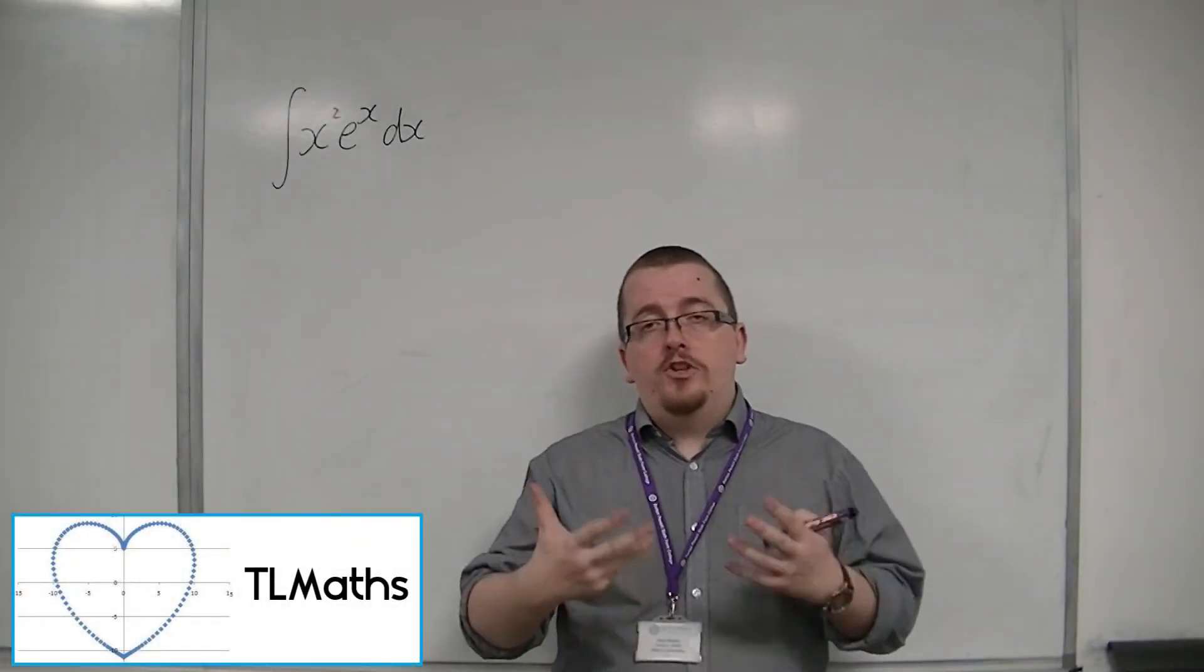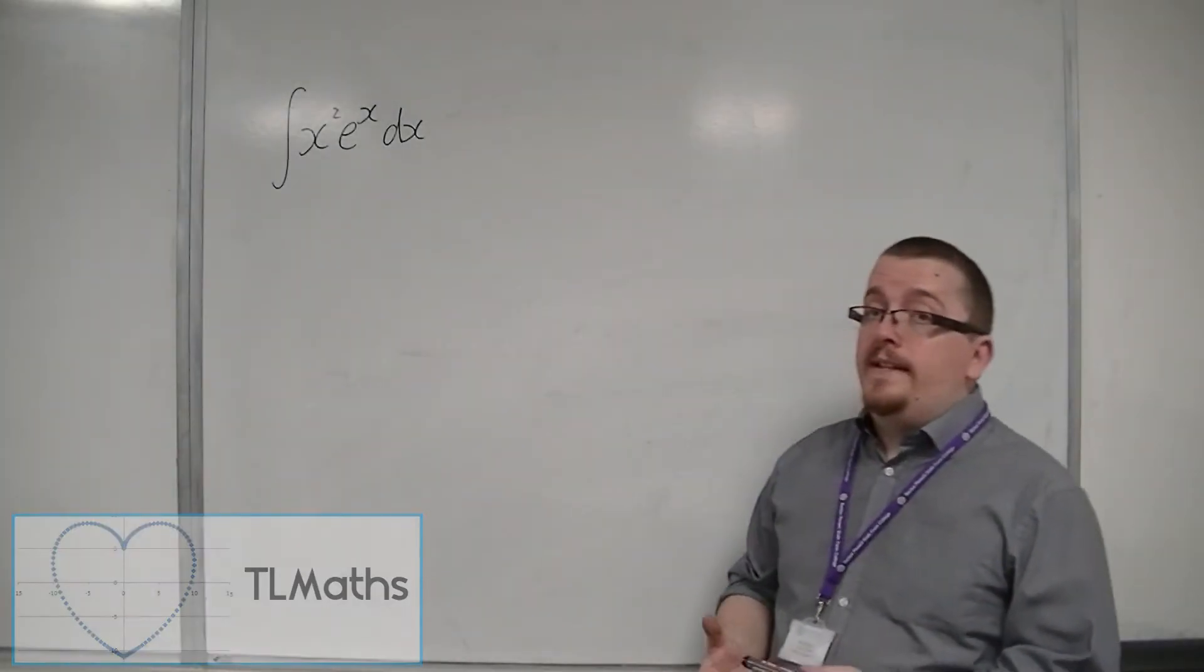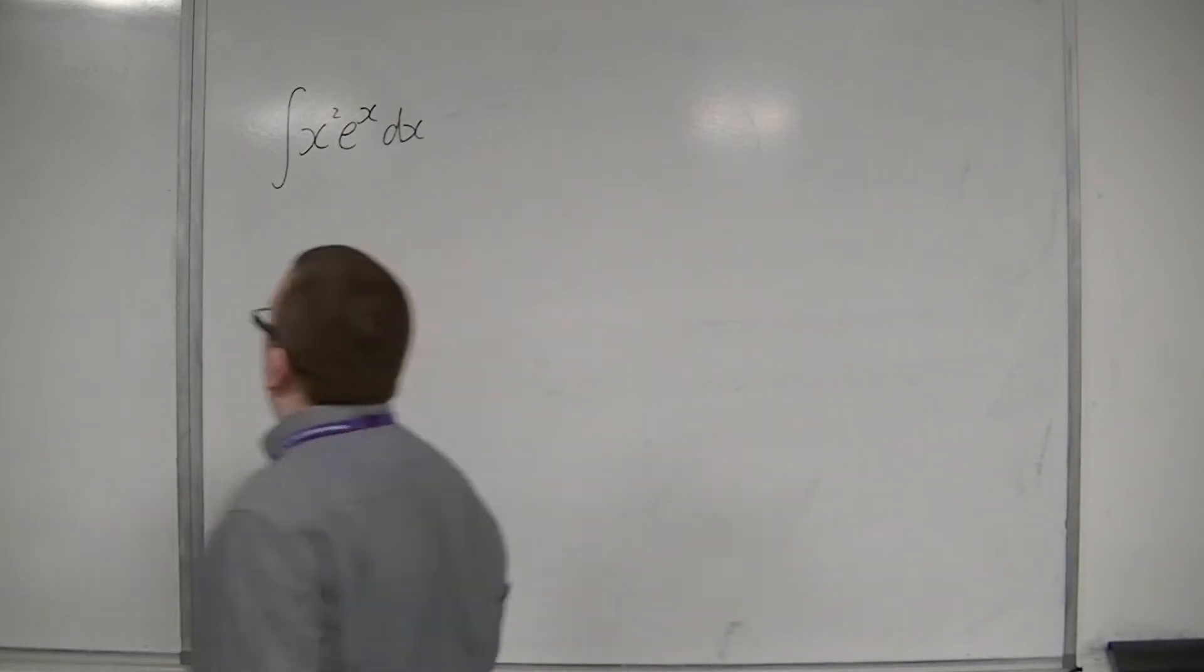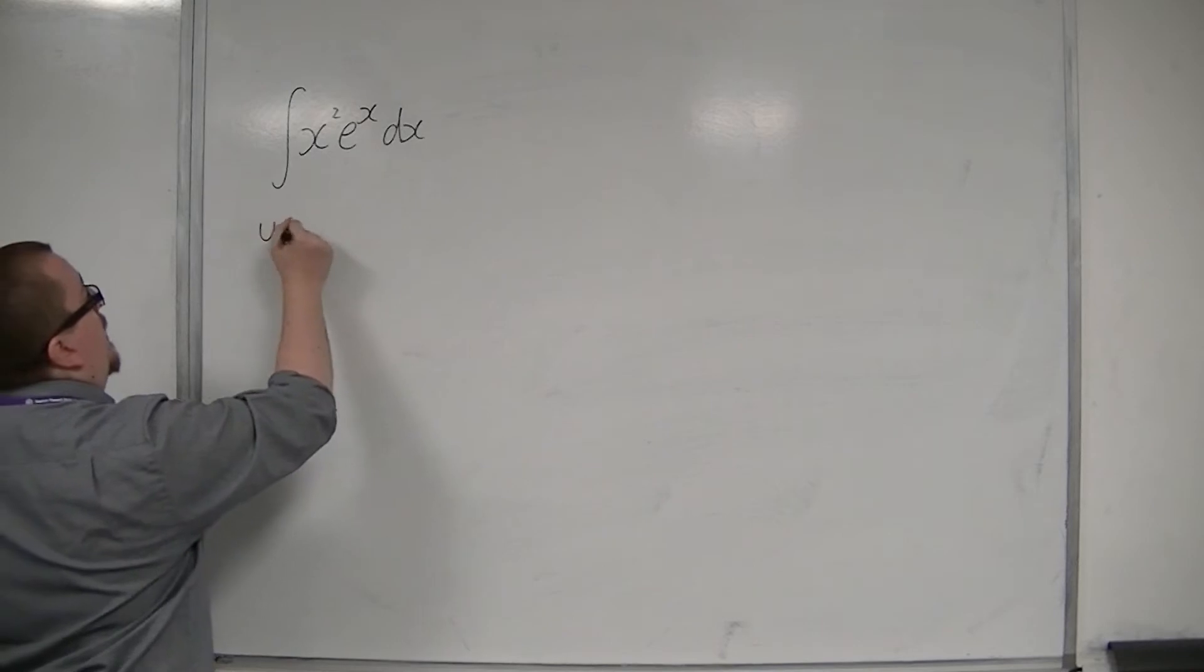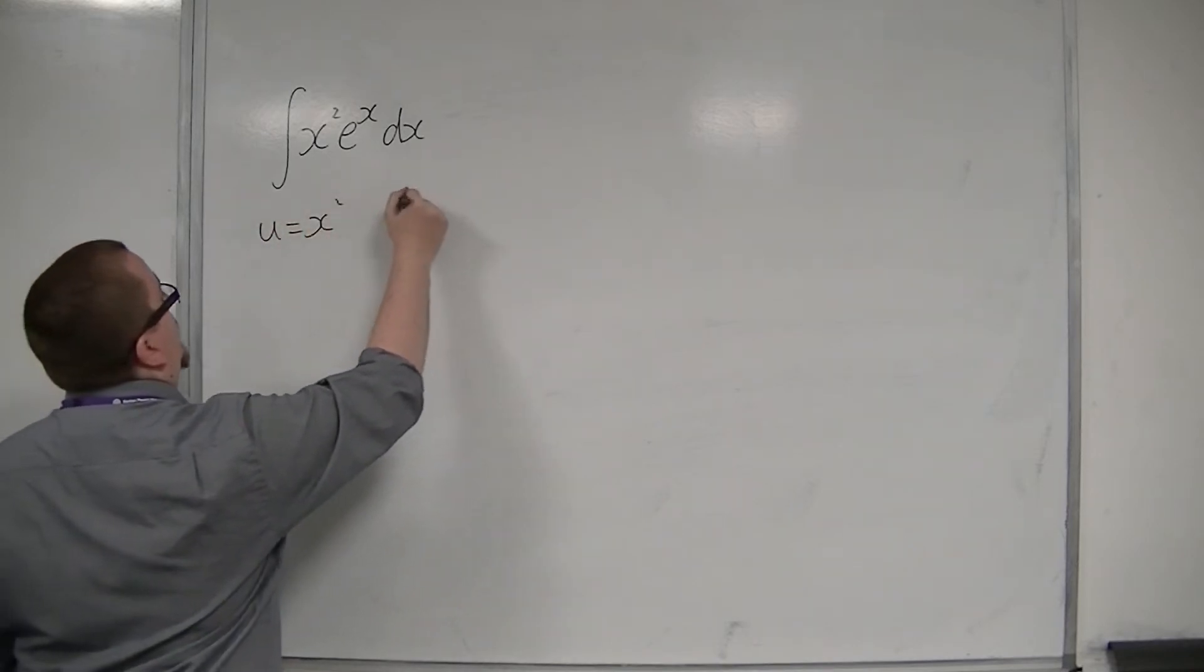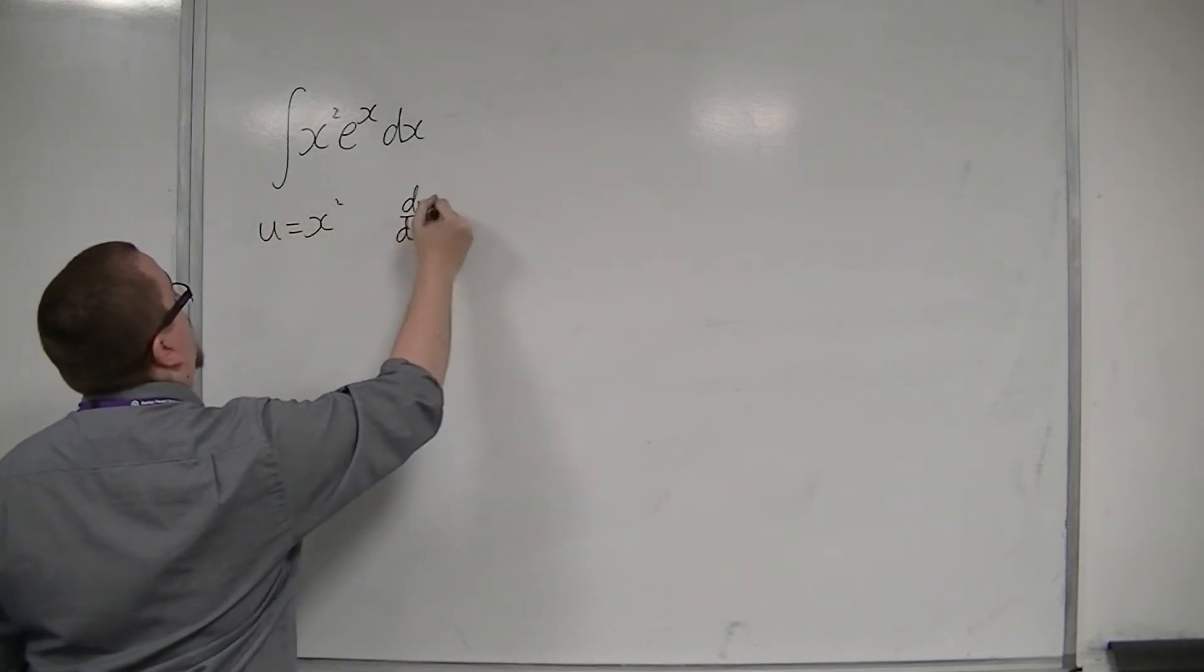Let's say we wanted to integrate x squared e to the x. So using the LATE rule, u will have to be x squared, and dv by dx will have to be e to the x.